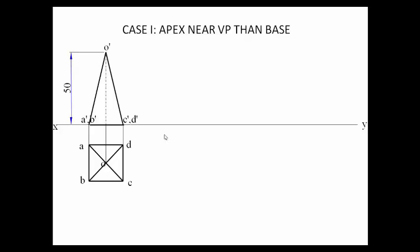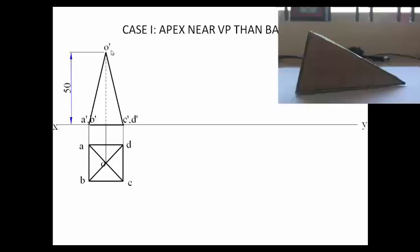In step 2, we ensure one triangular face — say face ocd — which in the front view appears as line o-dash c-dash d-dash, is grounded. We make this line overlap the XY line entirely, so the triangular face lies on the horizontal plane. We randomly select point c-dash d-dash and take an arc from c-dash to locate o-dash.